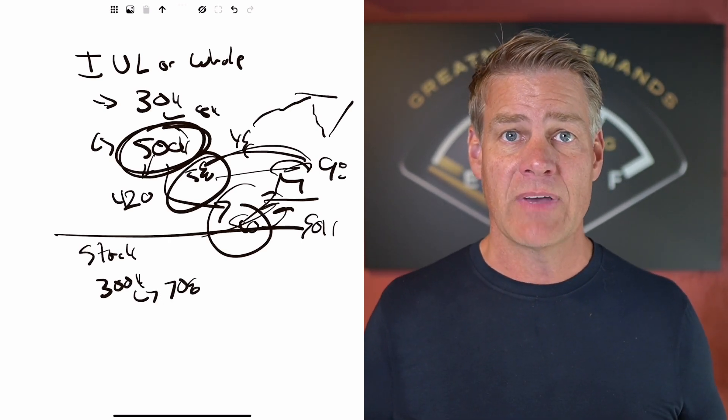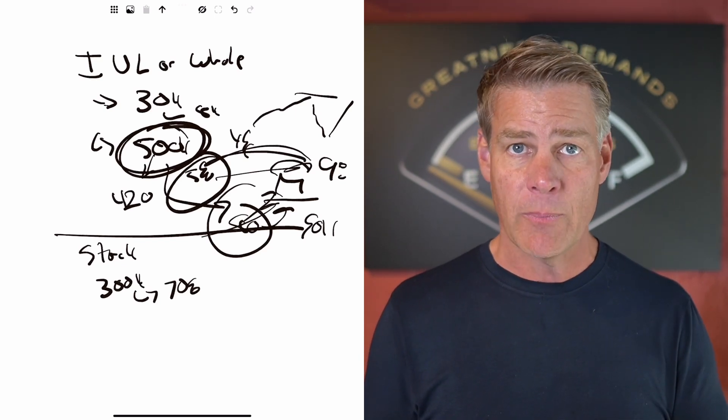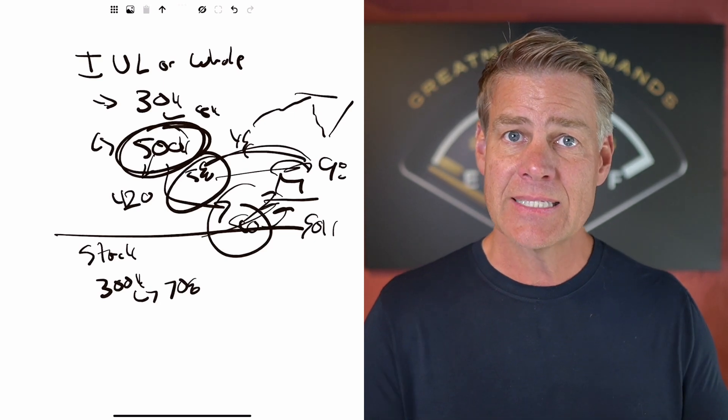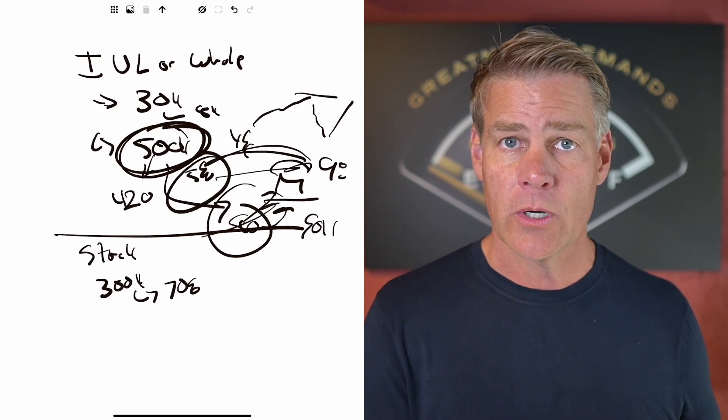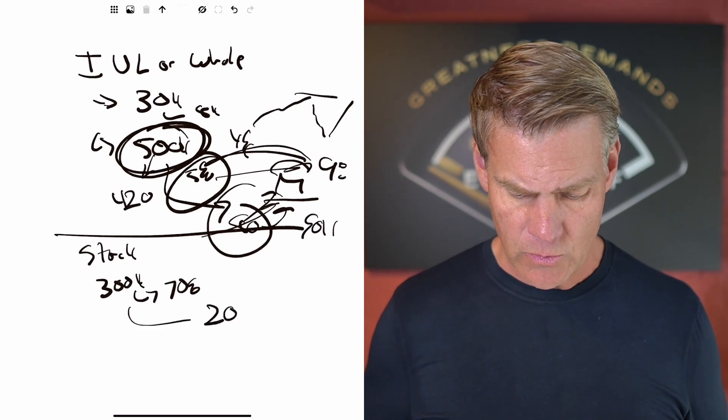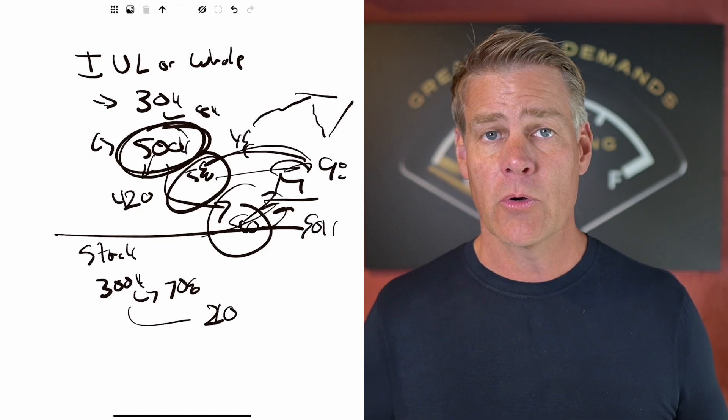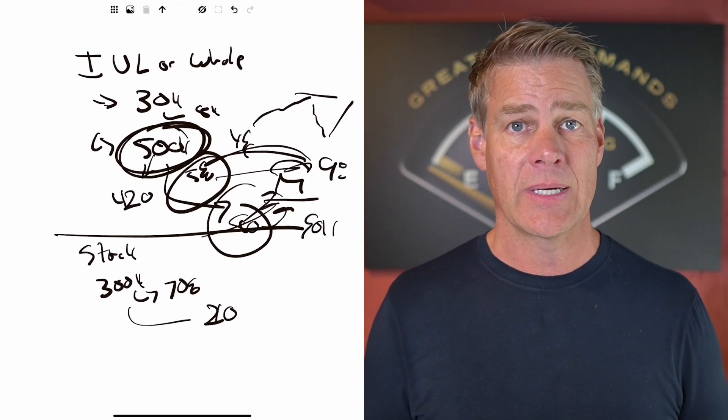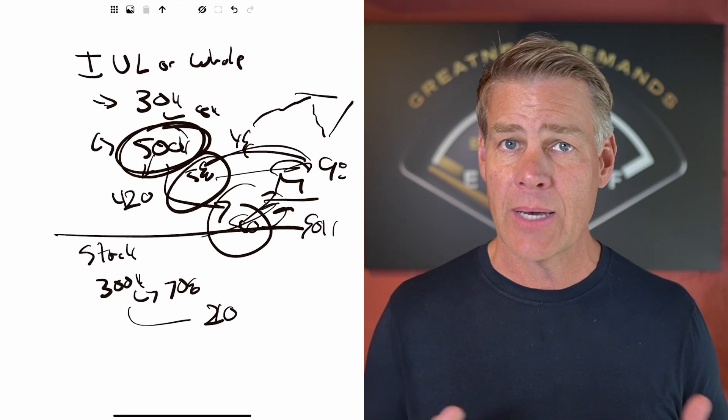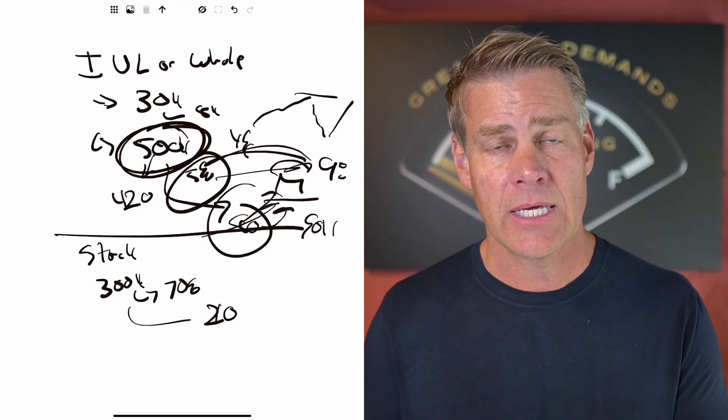You keep the $300,000 invested, similar to like what I described in the index universal life policy. But in this case, it's in the stock market with your broker. The broker loans you 70% of that. So you can take out $210,000. Now, you will have to pay your broker back. They're going to charge you interest on this money. And that interest rate can be pretty high, about 8%, even higher in some situations. But here's the thing.